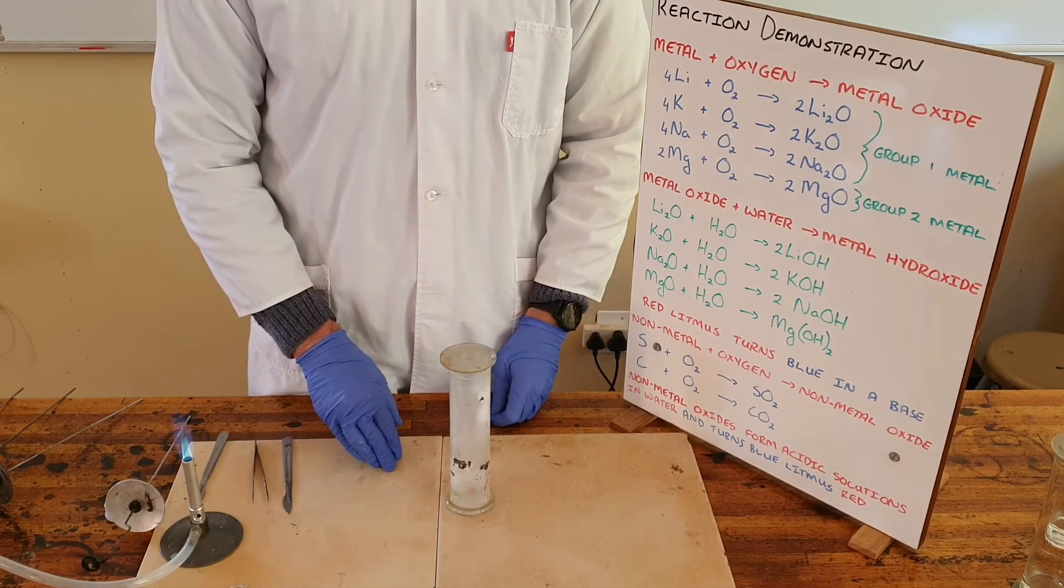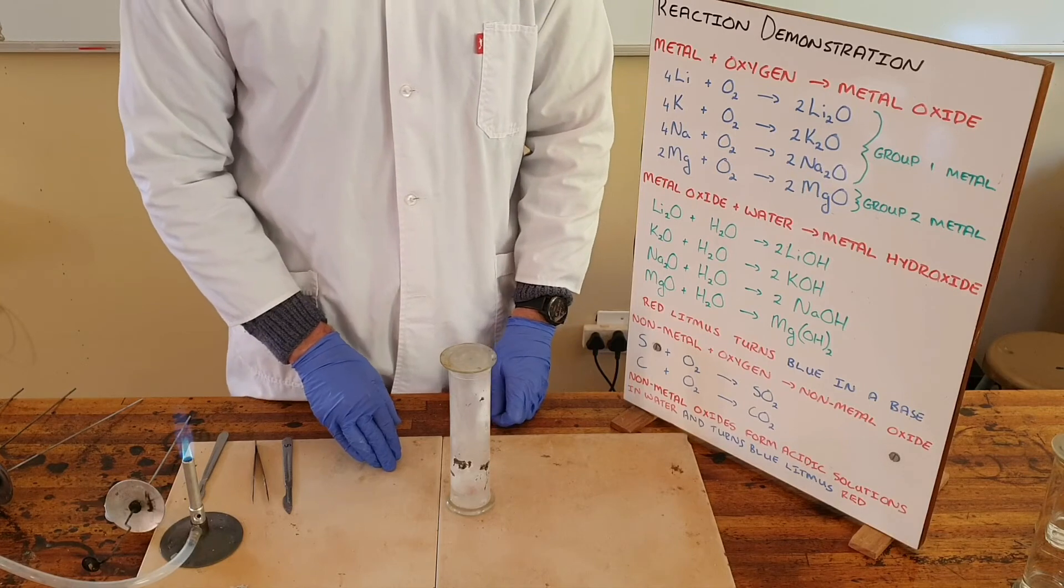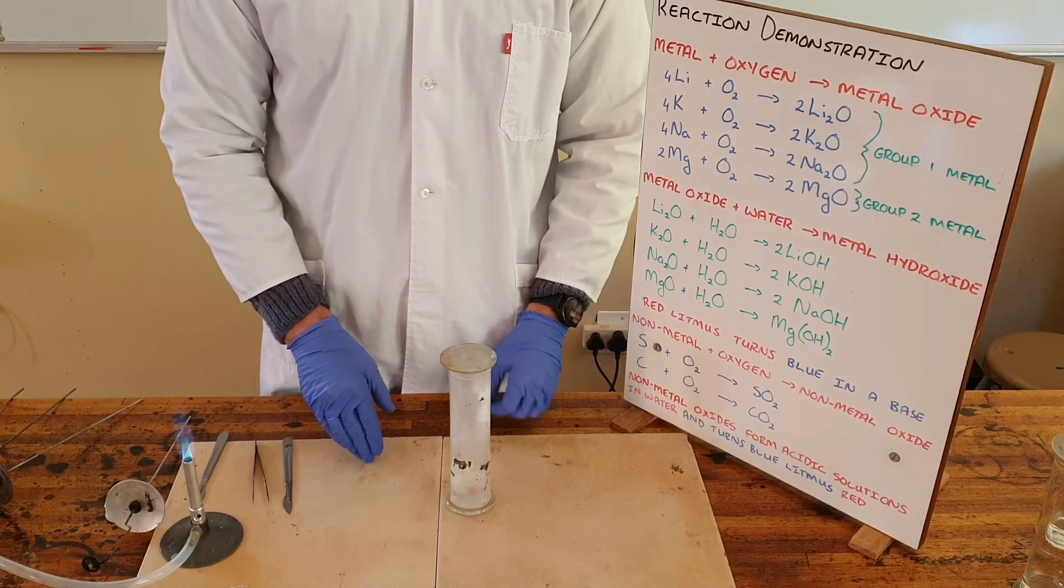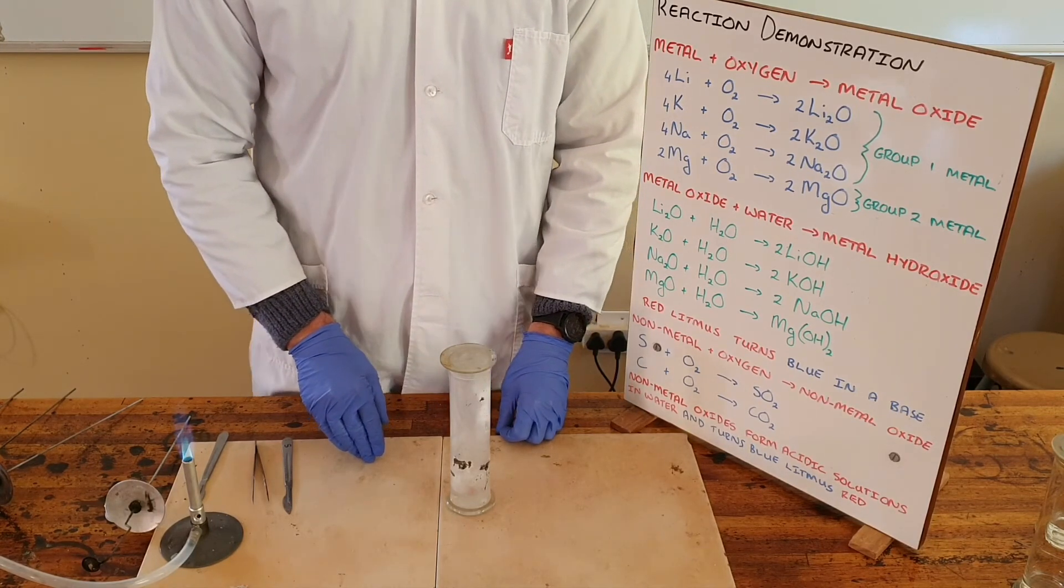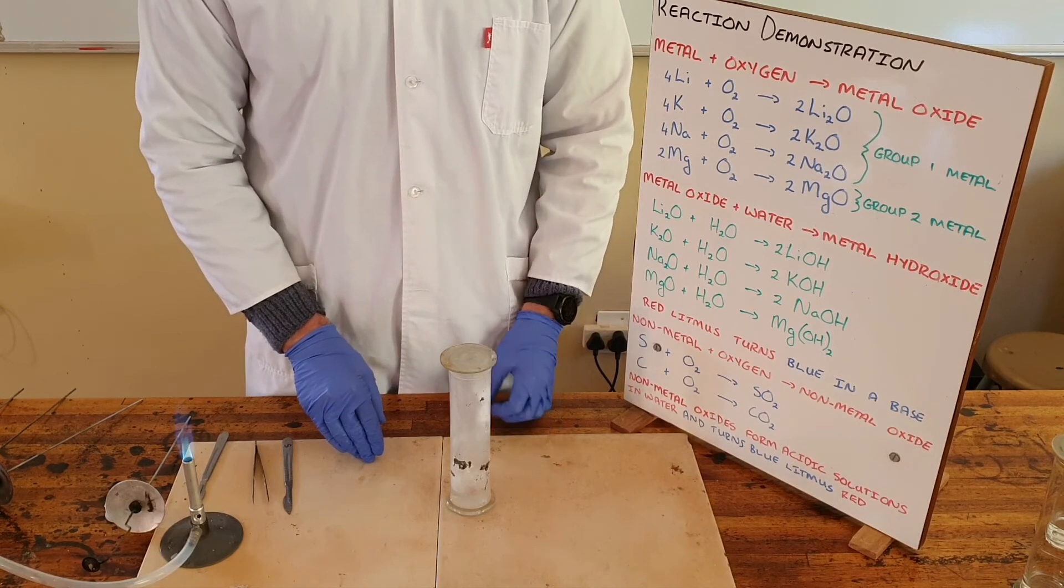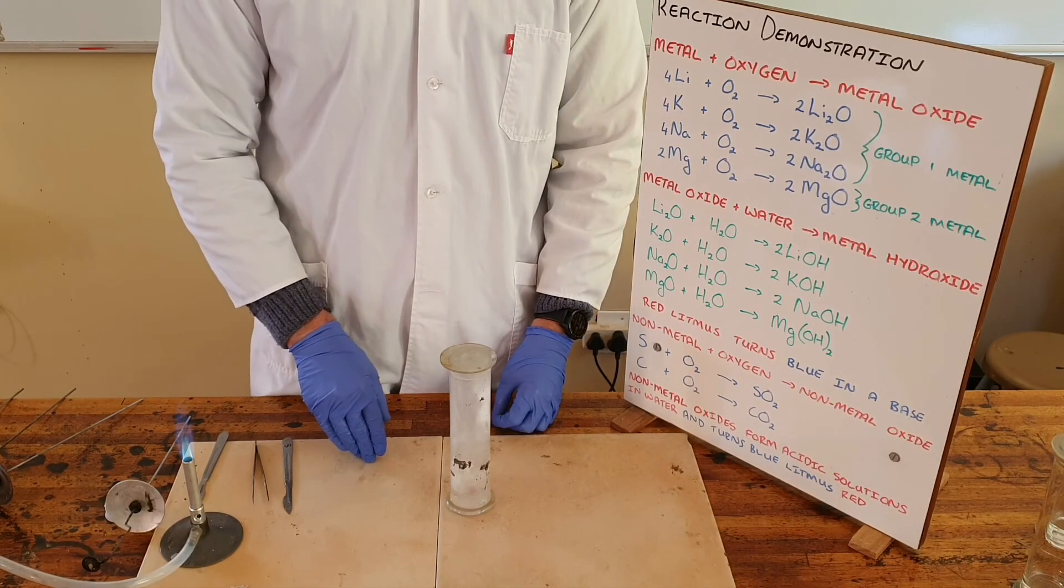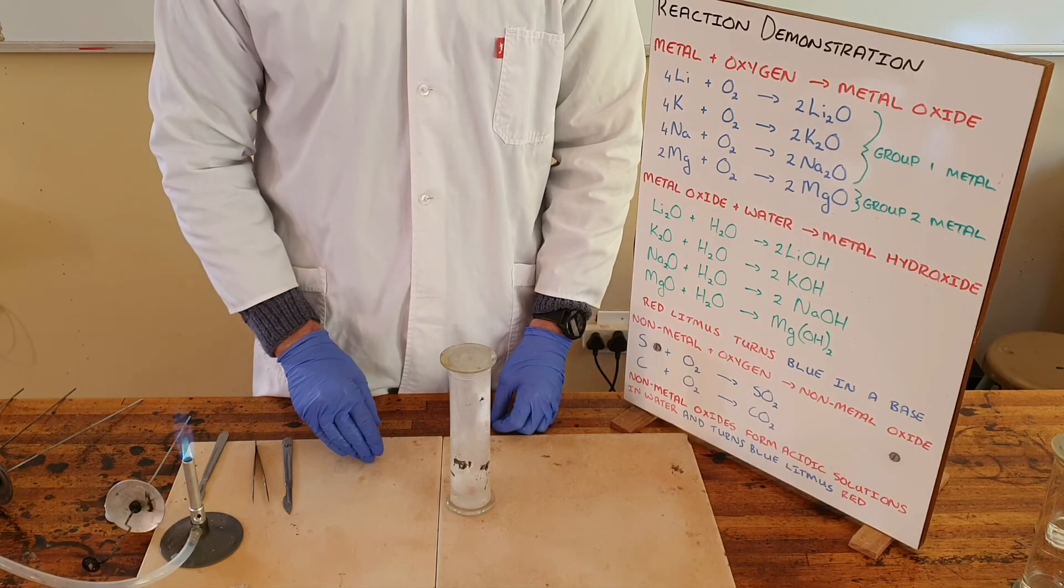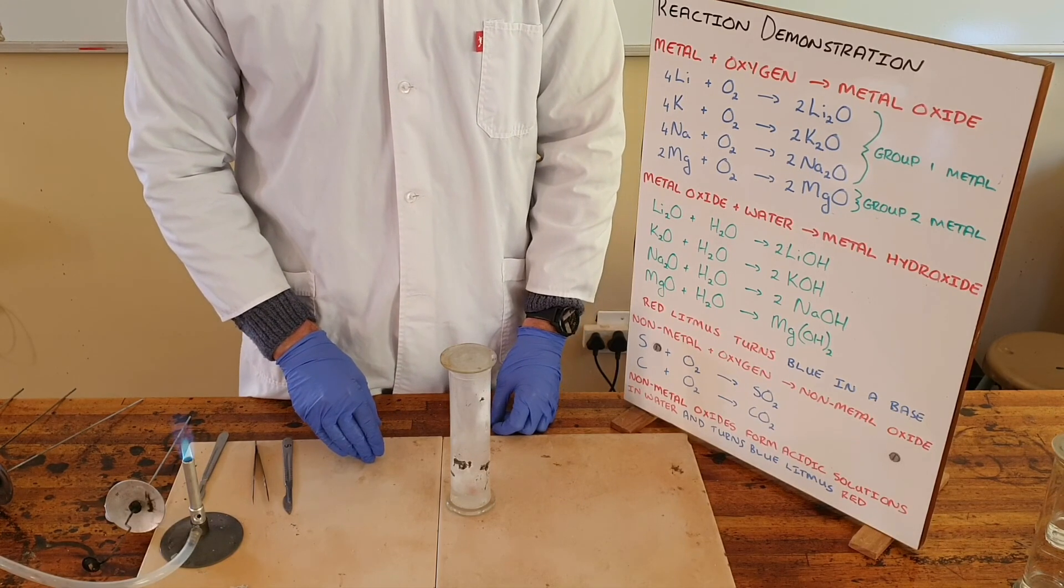Sodium burning in oxygen burns yellow or orange, and magnesium, as we've just seen, burns a very bright white color. The color that it burns is an indication of the temperature or the heat that the reaction gives off when the metal combines with oxygen.